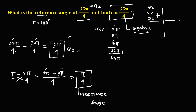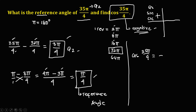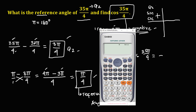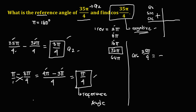To find the value of cosine 35π over 4: since the angle is in quadrant 2, the result is negative. The reference angle is π over 4, which equals 45°. Using the special triangle, cosine 45° equals √2 over 2. Therefore, cosine of 35π over 4 equals negative √2 over 2.